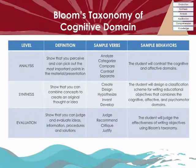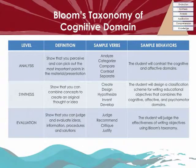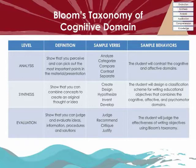The Analysis level is where students perceive and pick out the most important points. Verbs such as analyze, categorize, compare, contrast, and separate are used. Example: the student will contrast the cognitive and affective domains. At the Synthesis level, students show they can combine concepts and create an original thought or idea, using verbs such as create, design, hypothesize, invent, develop. Example: the student will design a classification scheme for writing educational objectives that combines the cognitive, affective, and psychomotor domains. The Evaluation level is when students judge and evaluate ideas, information, procedures, and solutions, using verbs such as judge, recommend, critique, and justify. Example: the student will judge the effectiveness of writing objectives using Bloom's Taxonomy.